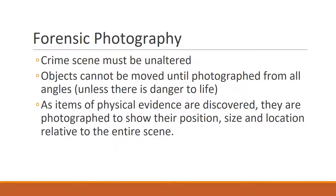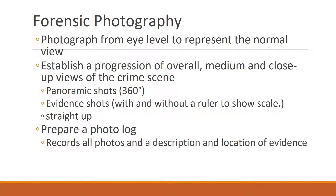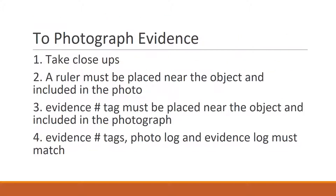For forensic photography, the crime scene must be completely unaltered. Objects cannot be moved until photographed from all angles. As items of physical evidence are discovered, they are photographed immediately in position with their size and location relative to the entire scene shown. Photograph from eye level to represent the normal view, then establish a progression of overall, medium, and close-up views. You want panoramic shots, evidence shots with and without a ruler to show scale, and straight-up shots. Prepare a photolog to record all photos, descriptions, and locations of evidence. A ruler and evidence number tag must be placed near the object and included in the photo, and the evidence number tags, photolog, and evidence log must all match.